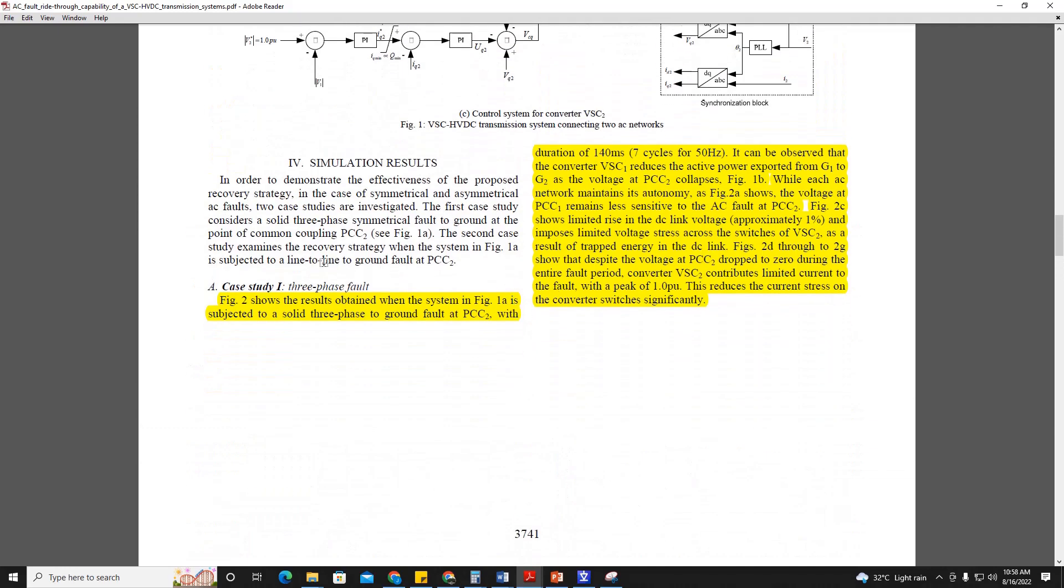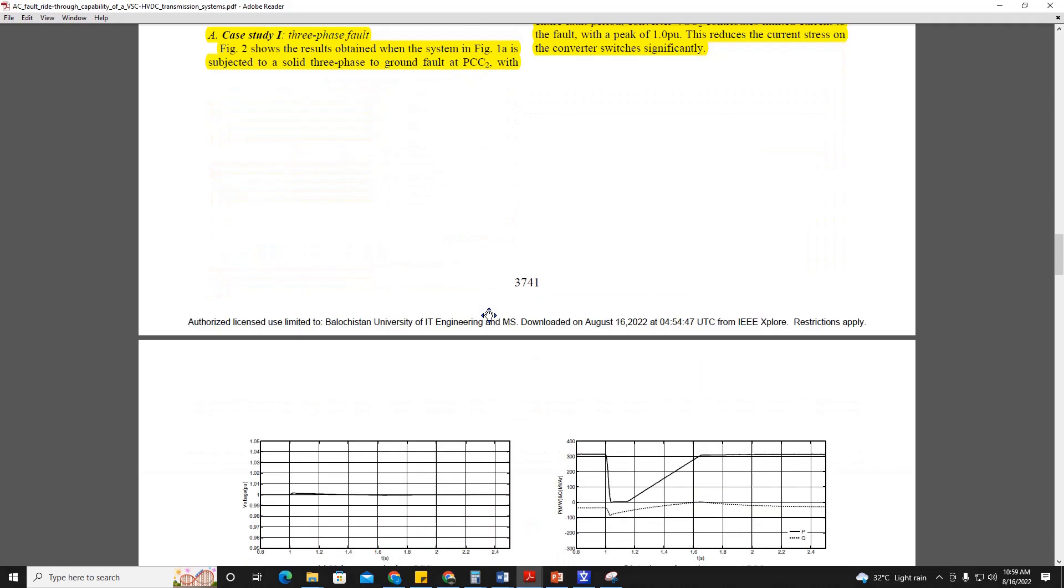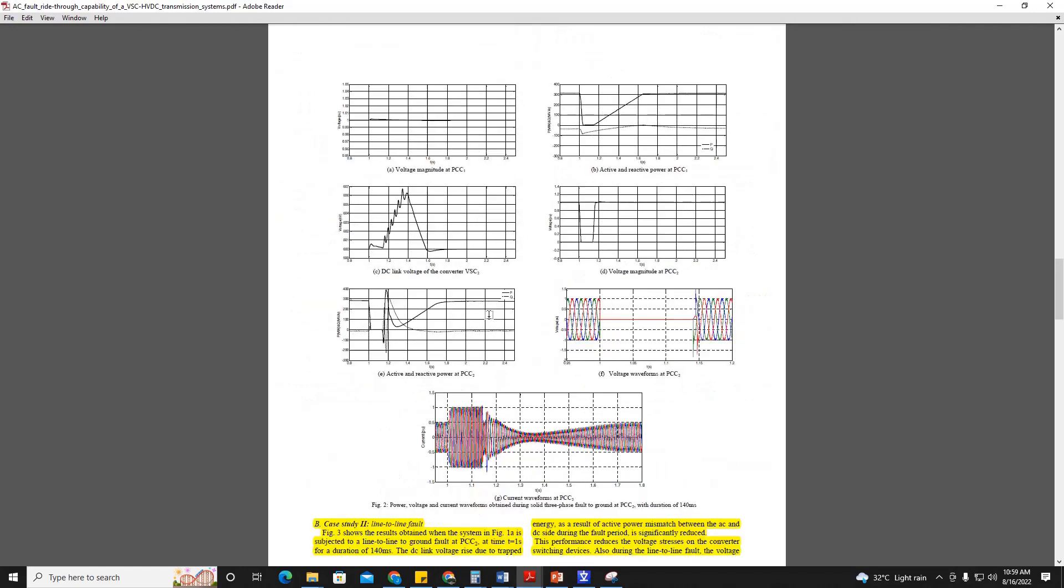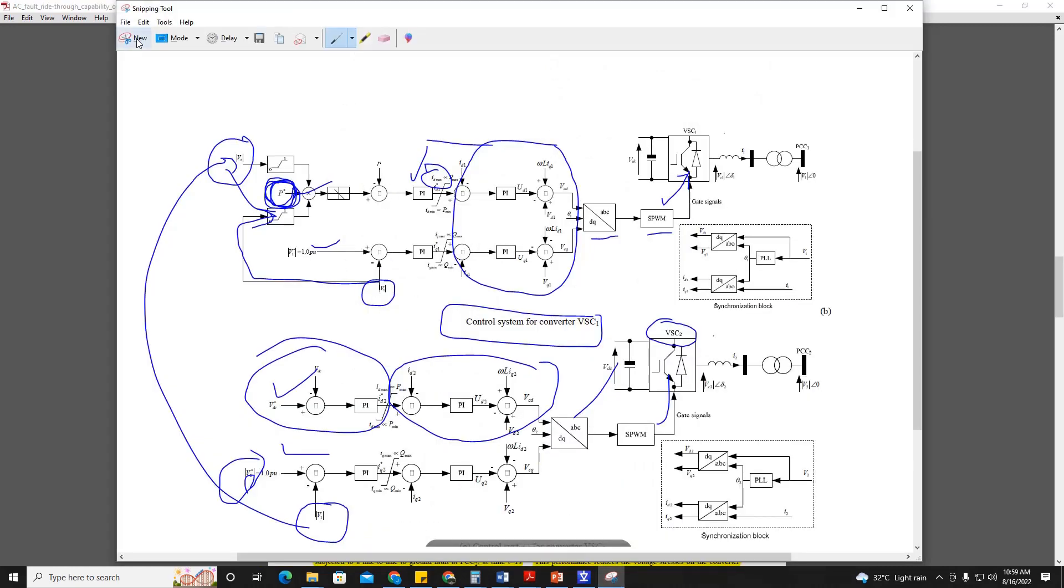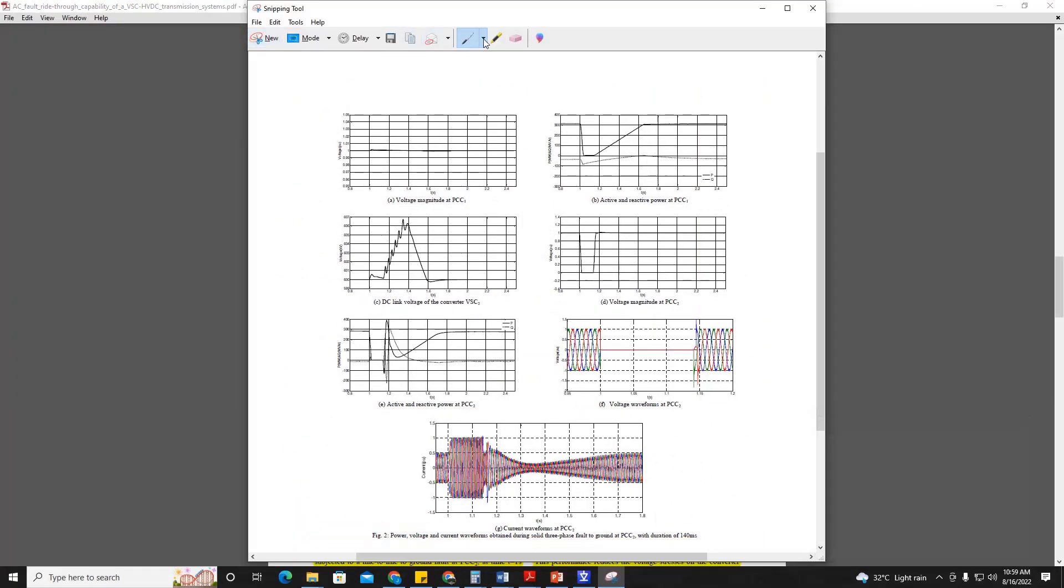Let's discuss simulation results. Case 1 is the three-phase fault which is more critical than case 2. The fault is for 7 cycles, 50 Hz, 140 ms. You can see here that the fault is happening at grid 2 and due to the three-phase fault, this voltage dip occurs. There is voltage dip and voltage interruption, zero voltage here.